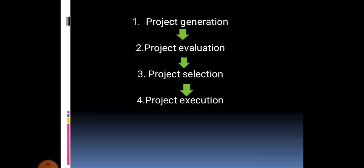Good morning students. Let us discuss the next concept, that is the capital budgeting process. Capital budgeting investments — what is the process? Here we have four stages: first is project generation, project evaluation, project selection, and project execution.